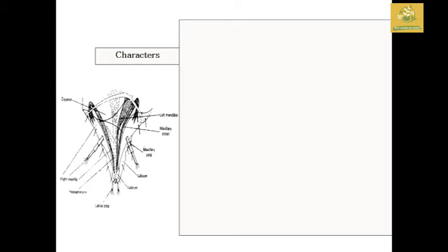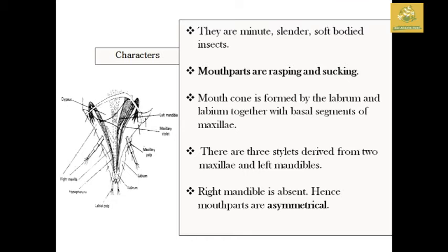Regarding the characteristics of Thysanoptera insects, they are minute, slender, and soft-bodied. Their mouthparts are used for rasping and sucking sap from plant cells. The mouth cone is formed by the labrum together with the basal segments of the maxillae. There are three stylets derived from two maxillae and one mandible — specifically the left mandible.